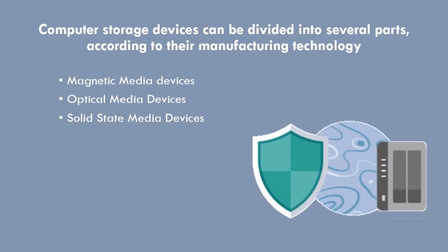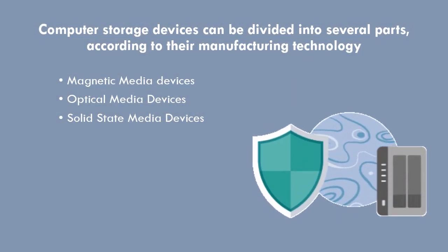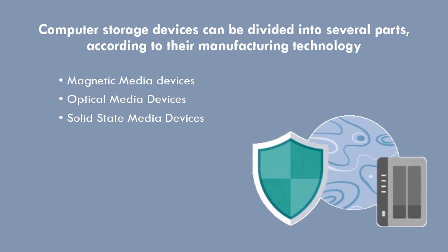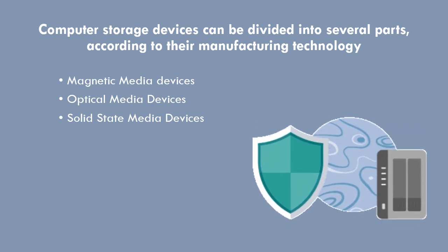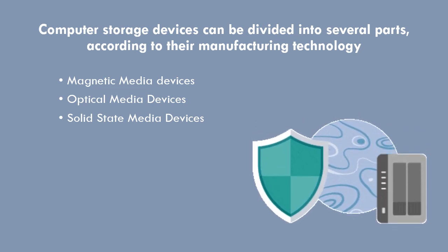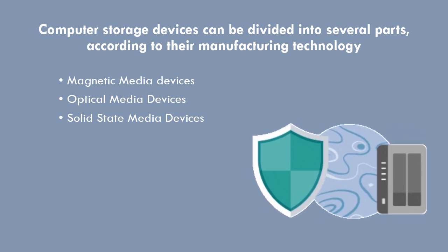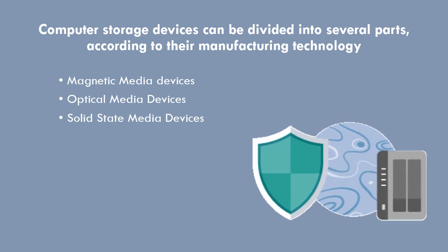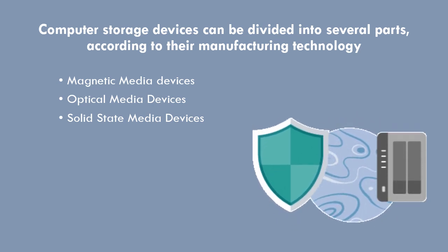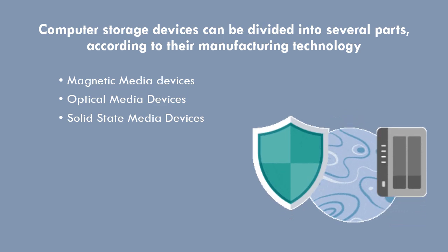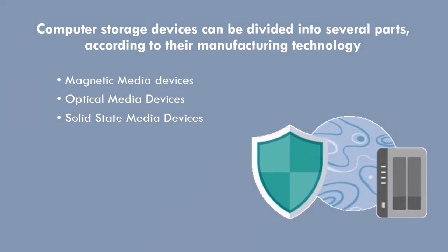Computer storage devices can be divided into three parts according to their manufacturing technology: magnetic media devices, optical media devices, and solid state media devices.